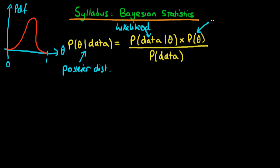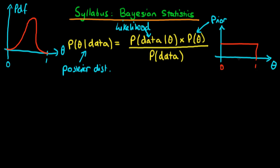The second term in the numerator is what we call the prior. The prior represents our pre-experimental knowledge of the parameter values. In the example where we're thinking about the probability that a random individual has a particular disease, we might imagine that all probabilities of having that disease are equally likely, so we would specify that the prior density is uniform on 0 to 1.